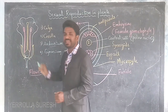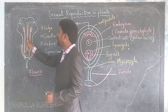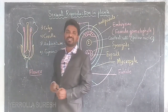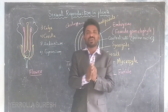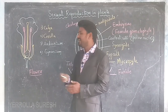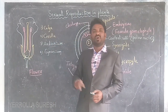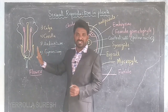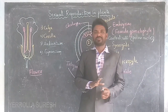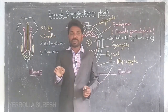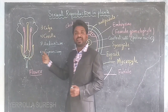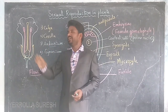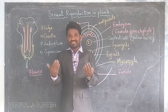The gynoecium, the central part, has three parts: the ovary, the style, and the stigma. The lower rounded structure is the ovary, the middle tube-like structure is the style, and the upper part is the stigma. Inside the gynoecium, there are ovules, which are the female gametes. So male gametes — pollen grains — are present in the anther, and female gametes — ovules — are present in the ovary.